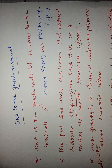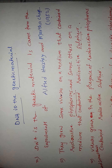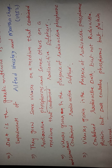Viruses grown on a phosphorus-containing media are not allowed to grow on a sulfur-containing media. These viruses consist of radioactive labeled DNA but not radioactive protein. Phosphorus is present in the DNA but sulfur is not present in DNA. So to prove that DNA is the genetic material, some viruses were allowed to grow in radioactive phosphorus. Similarly, viruses grown on radioactive sulfur contain radioactive protein but not radioactive DNA, because DNA does not contain sulfur.